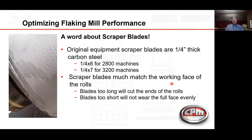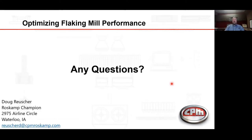We also need to look at the scraper blades. The original equipment blades are a quarter inch thick and must match the width of the machine itself. If the scrapers are too short, they will cut into the face of the roll. If they're too long, they will cut into the ends of the roll.